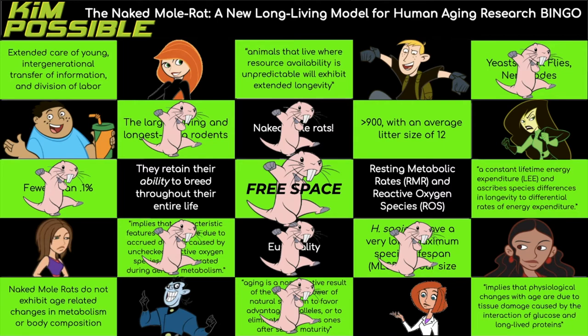How many offspring can a fecund female reproduce? This number also really surprised me. A female can produce greater than 900 offspring with average litters of 12. What makes naked mole rats so unique is that despite having children, their longevity does not decrease — which is what's seen in other organisms, where reproduction decreases longevity. But this isn't the case with naked mole rats.